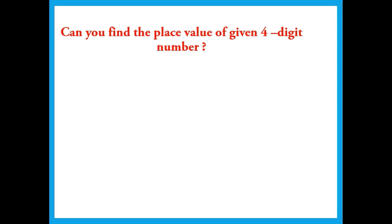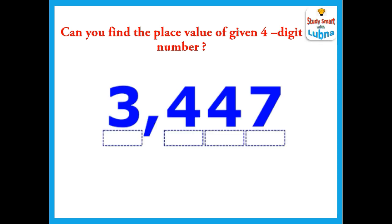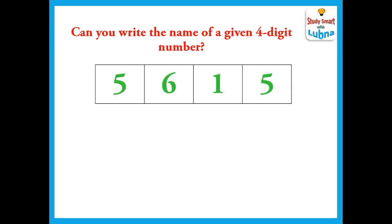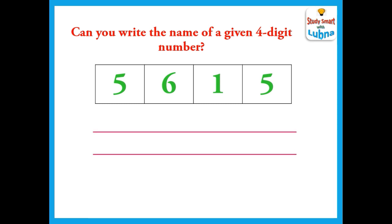Here is a short test for you. Can you find the place value of the given four digit number? The number is 3447. You have to write the place values of seven, four, four, and three in the given boxes. Another short test: can you write the name of the given four digit number? Here again another four digit number is given — you have to write its name, or write it in words.